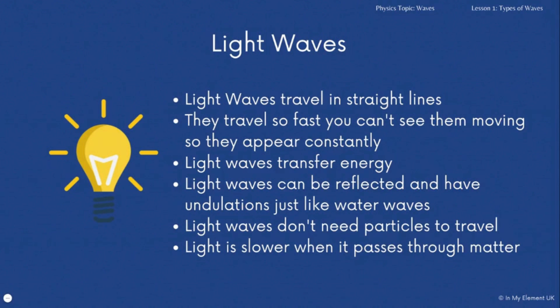Light is much slower when it passes through matter. The speed of light in a vacuum, so when there are no matter, no particles, is 300 million meters per second. That can also be written as 3 times 10 to the power of 8 meters per second. You just need to know that the speed of light is very, very fast.